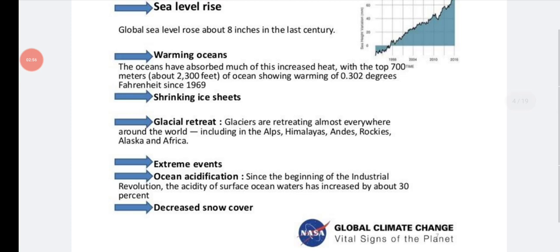Glaciers are retreating almost everywhere around the world including in the Alps, Himalayas, Andes, Rockies, Alaska and Africa. These are the mountain ranges in the world. So there is glacial retreat or ice sheet melting.